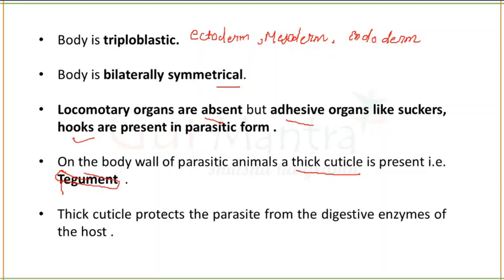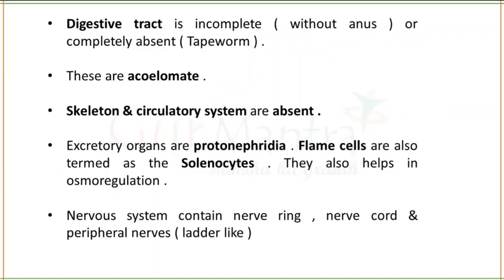The host, for example, could be a human. If these endoparasites are inside a human body, the human body will have digestive enzymes that will try to degrade and destroy these parasites. So the thick cuticle layer on the body wall of the endoparasites — called tegument — protects the parasites from those digestive enzymes. That is the function of tegument.